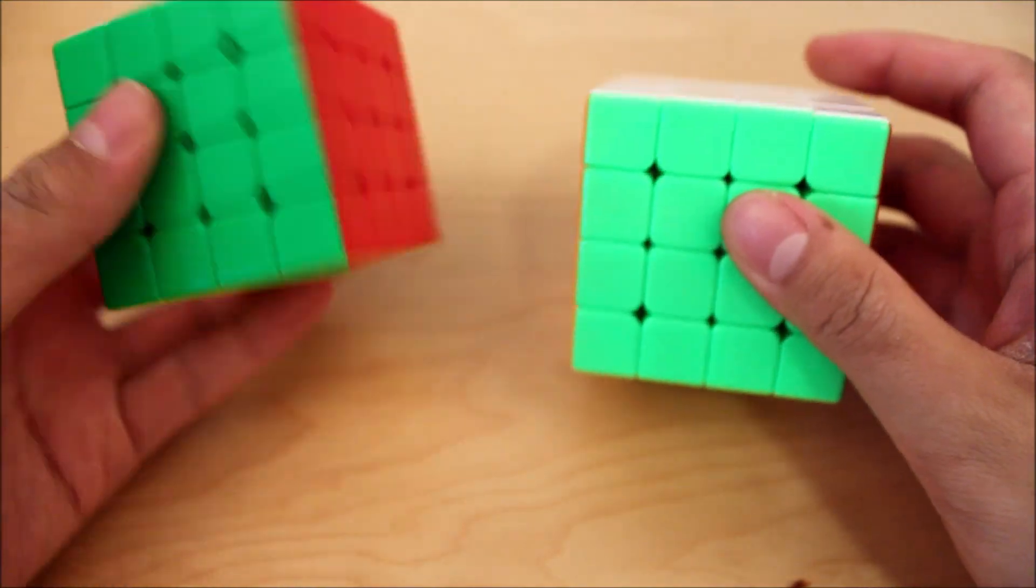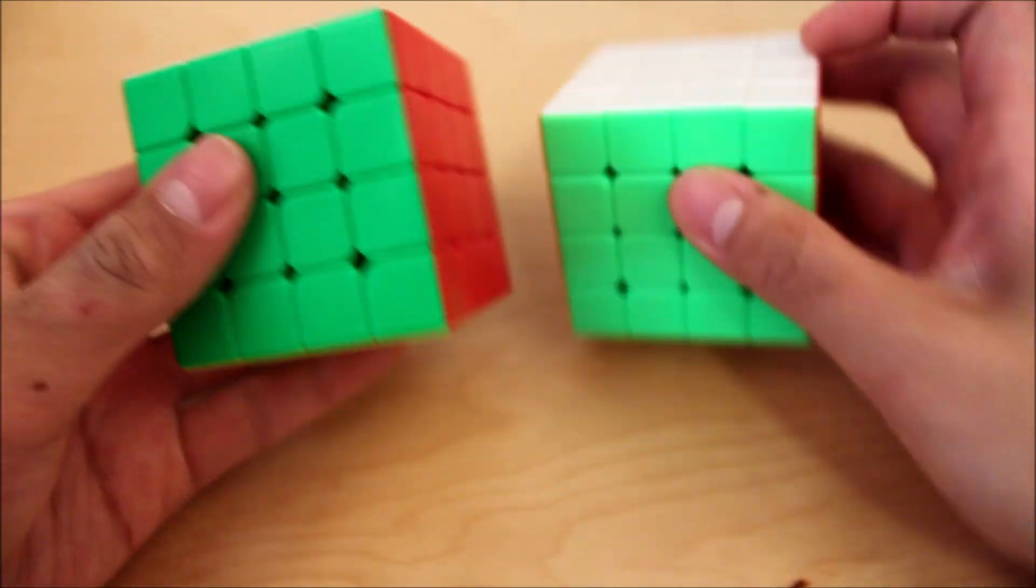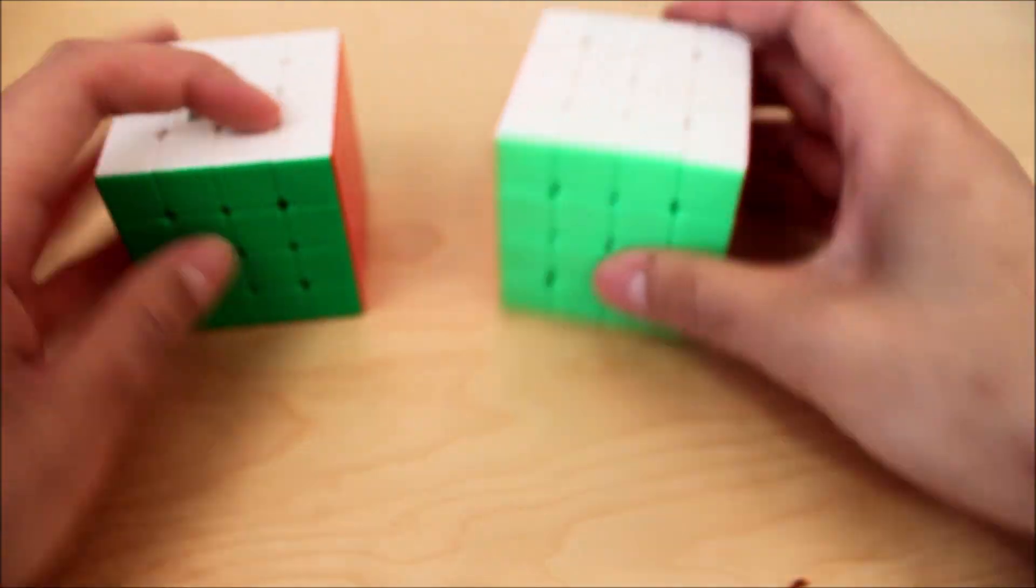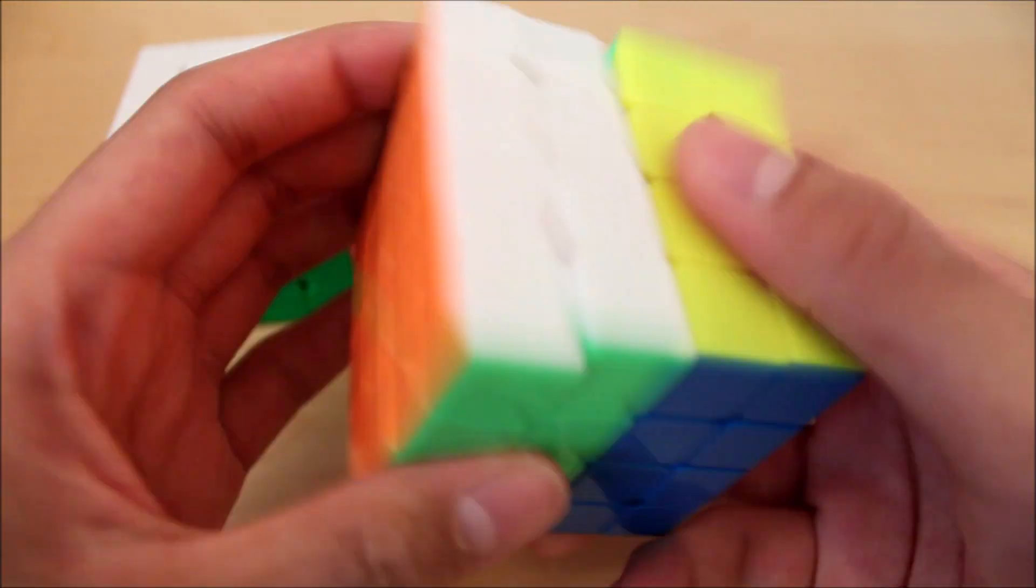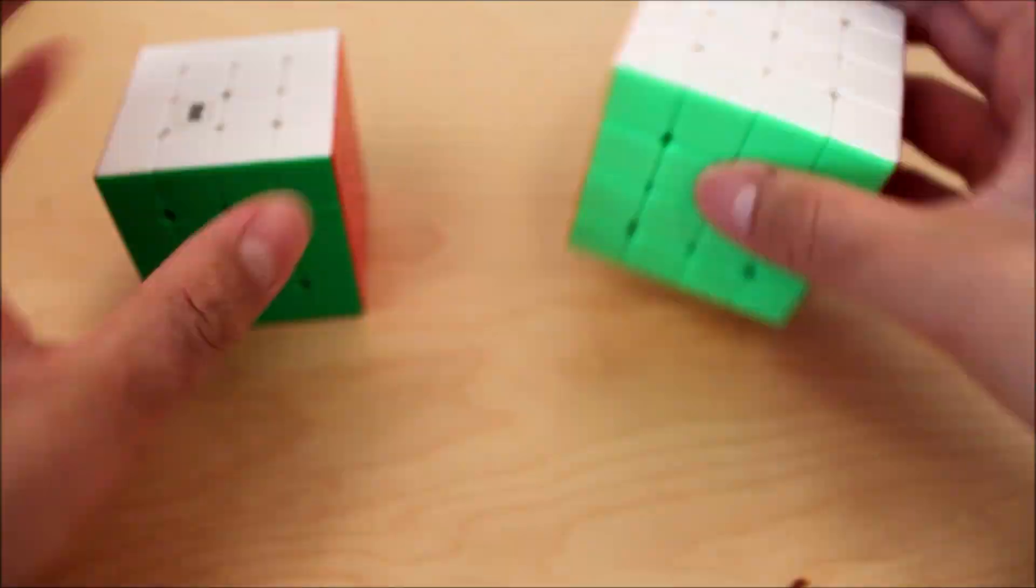Alright, now for magnets. For me at least, it seems like the WR-M has stronger magnets, so inner layers are quite strong. While the Aosu GTS-2 is a tiny bit weaker. Same for the outers.